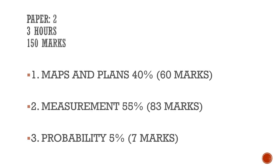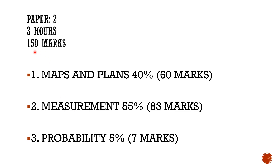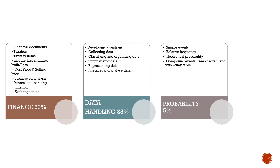Paper 2 is again three hours and 150 marks. The topics covered are: Topic 1, Maps and Plans, making up 40% of the paper; Topic 2, Measurement, making up 55%; and Probability again at just 5%. In marks, Maps and Plans will be 60 marks, Measurement 83 marks, and Probability plus-minus 5 marks.